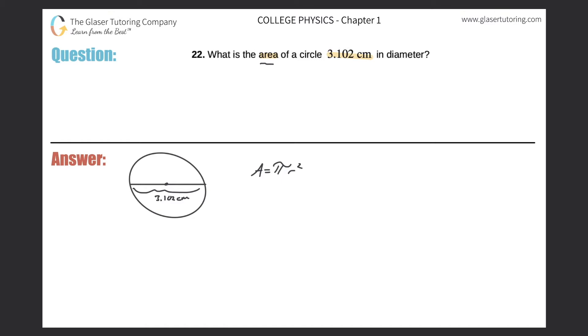But they gave us the diameter. We just have to remember the relationship between the radius and the diameter, right? The radius is the distance between the center of the circle and the edge. Whereas the diameter is the measure from one edge of the circle to the other edge that passes through the center. So it should kind of make sense that the radius is going to be always half of the diameter.